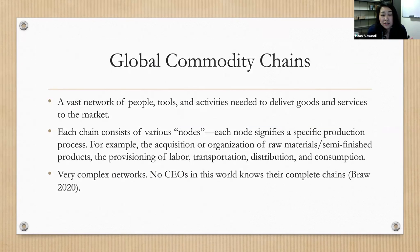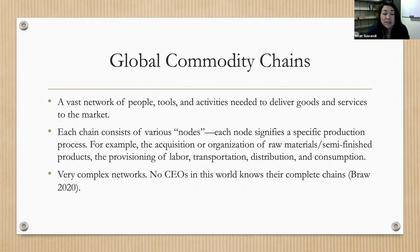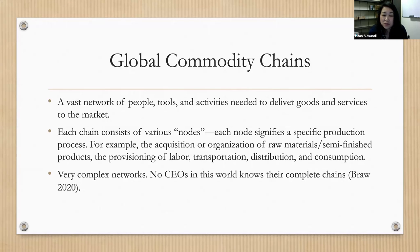What we see are global commodity chains — also called global value chains. Used interchangeably, the term means a vast network of people, tools, and activities needed to deliver goods and services to the market. Each chain consists of various nodes, with each node signifying a specific production process — for example, acquisition of raw materials, production of semi-finished products, provisioning of labor, transportation, and so on.